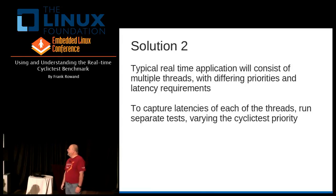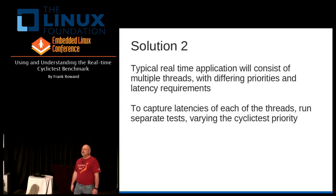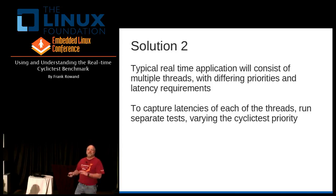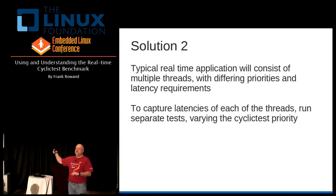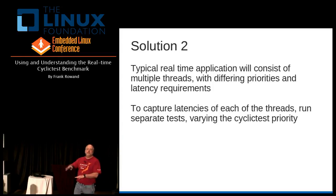Typically you're not going to have one thread — you'll have several real-time threads running at different priorities with different needs. So you'll actually need to measure the latency for each of these different priorities. You'll run your benchmark with cyclic test at a higher priority than your most important thread and measure its latency. Then you'll run the benchmark again with the cyclic test priority in between those two real-time task priorities, and measure the latency of the lower real-time priority task.